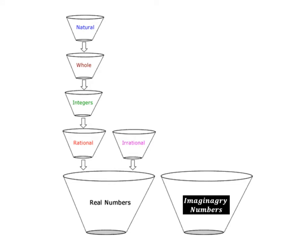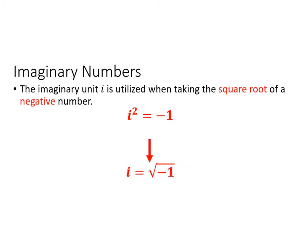What we're going to be talking about today is the other type of numbers that we focus on all year. On the left here is this diagram we used at the beginning of the year, where we talked about how all numbers are classifications of real numbers. Today we're going to be talking about imaginary numbers, which means we're taking the square root of a negative number, and we're now defining what that means. The imaginary unit i is utilized when you're taking the square root of a negative number. It is defined as i squared equals negative 1, which we can rewrite as i equals the square root of negative 1.